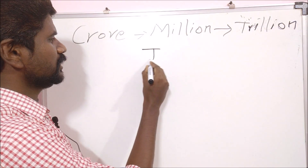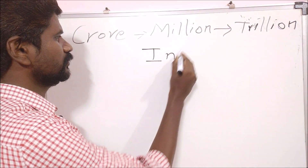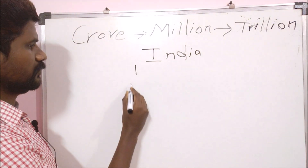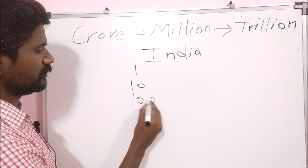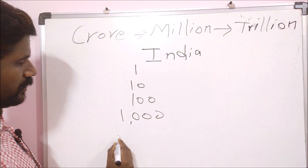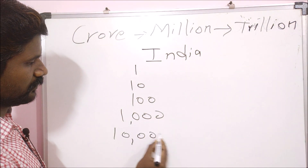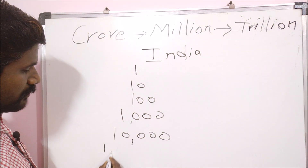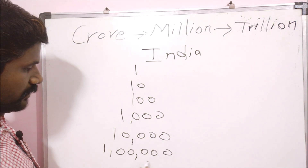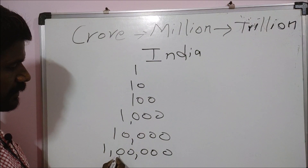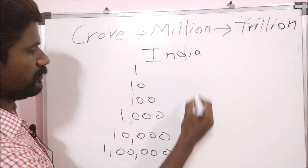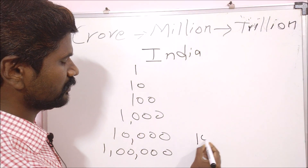If we look at India, we can see how the number system works — starting from 1, 10, 100, and building up. You can see how the Indian number system places digits, and the US Western system is the same in terms of base digits.